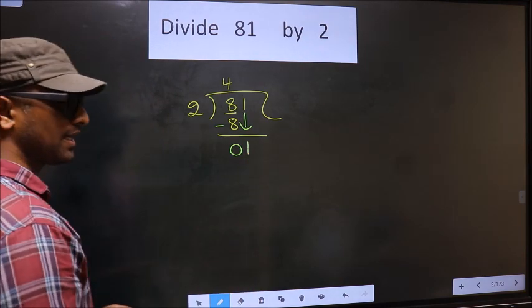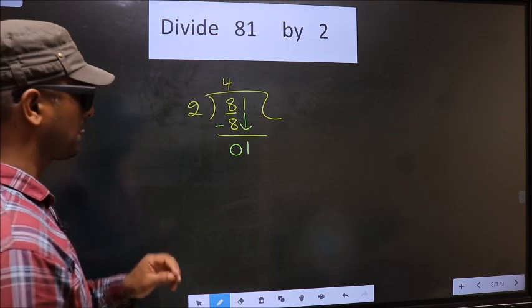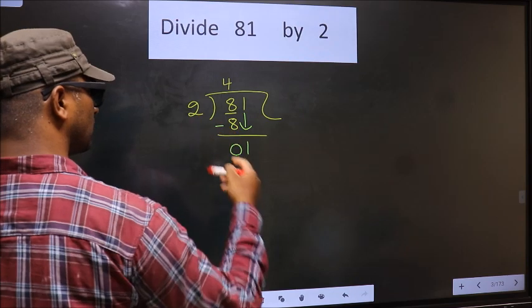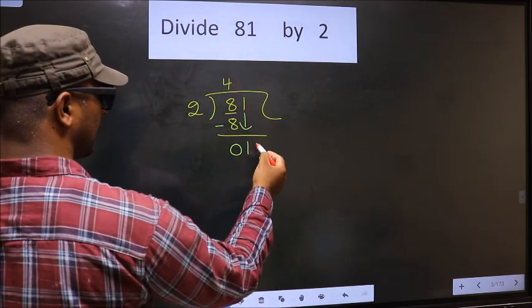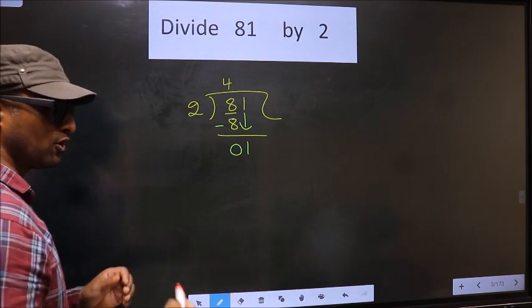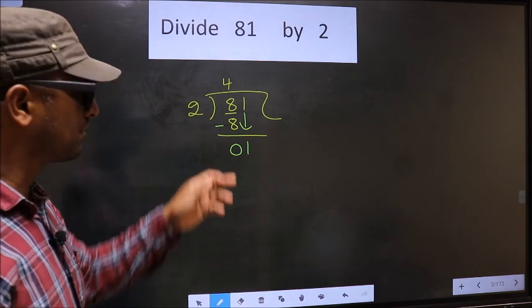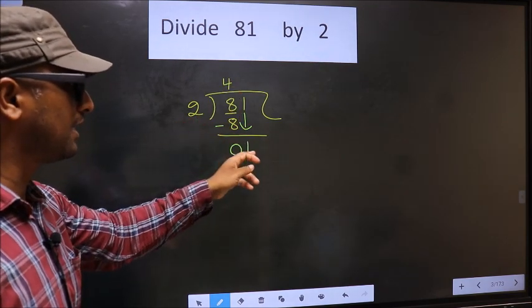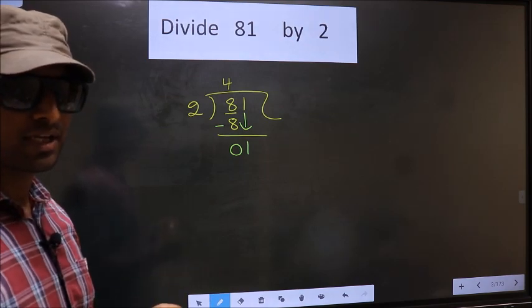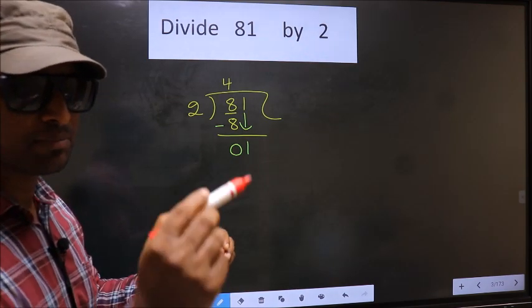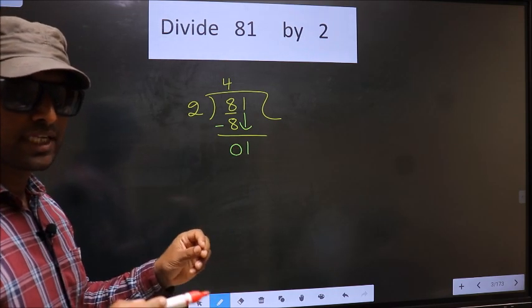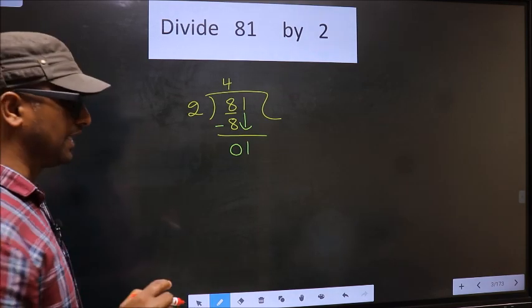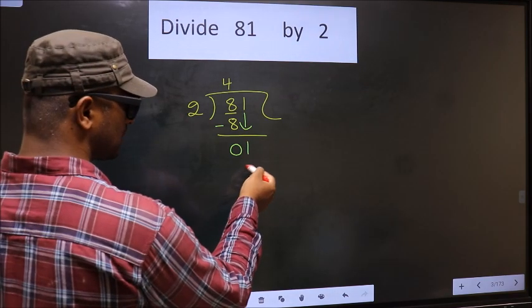This is where the mistake happens. And the mistake is this. Here we have 1. Here 2. 1 is smaller than 2. So what many do is they put a dot and take 0 here, which is wrong. Just now you brought a number down, and in the same step you want to put a dot and take 0, which is wrong. I repeat: bringing a number down and putting a dot and taking 0, both at the same step, you are not supposed to do.